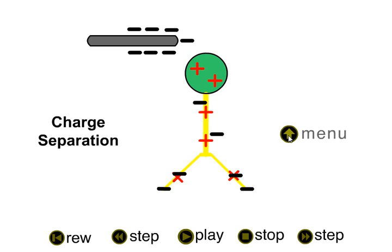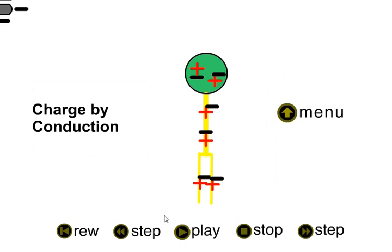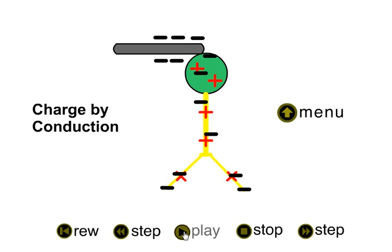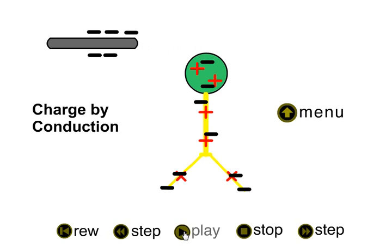We could also charge the electroscope. We can move the charged rod to the electroscope and touch it. Some of those negative charges then transfer to the electroscope, leaving it with a net negative charge, and therefore the vanes will be pushed away from each other.